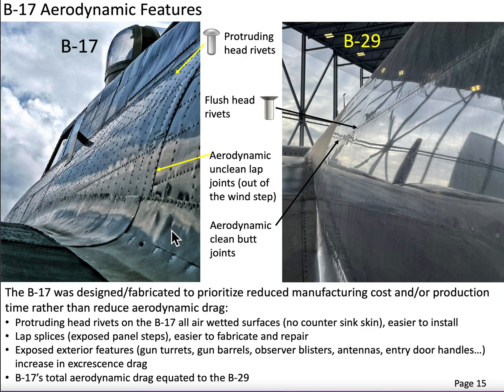The last observable difference in the external features of the B-17 is that there are more exposed features overall. The gun turrets are much larger on the B-17 than on the B-29. There are also more exposed antennas, and looking at the crew entry door handles, they are much larger and more exposed on the B-17 than on the B-29.